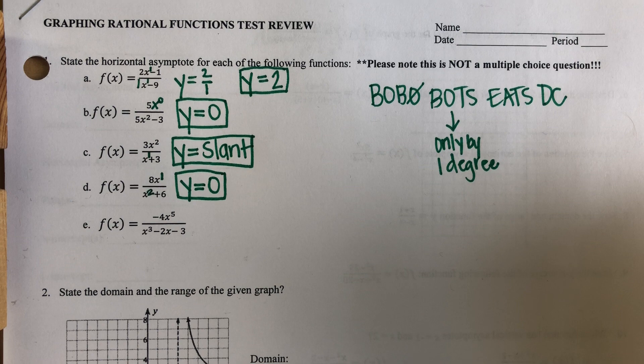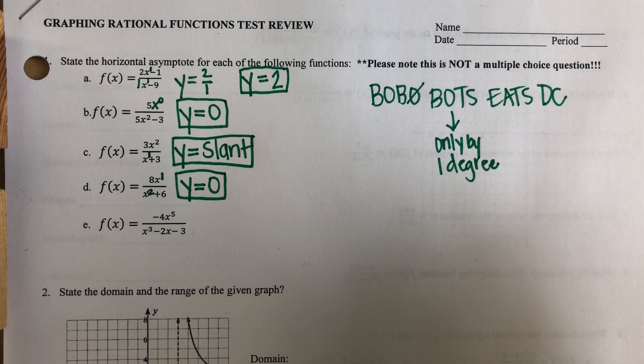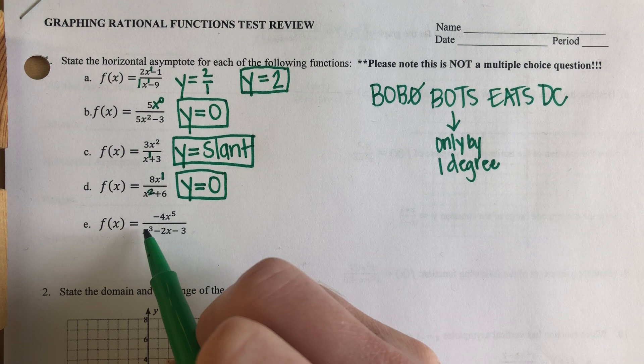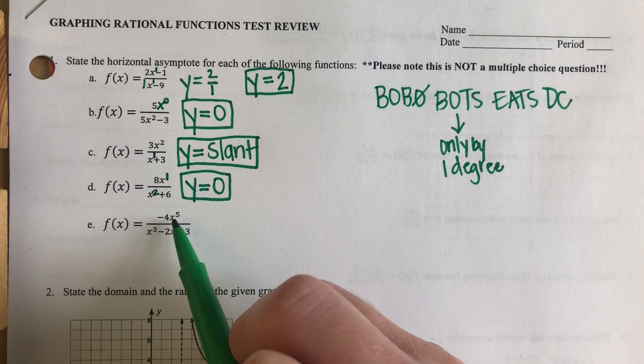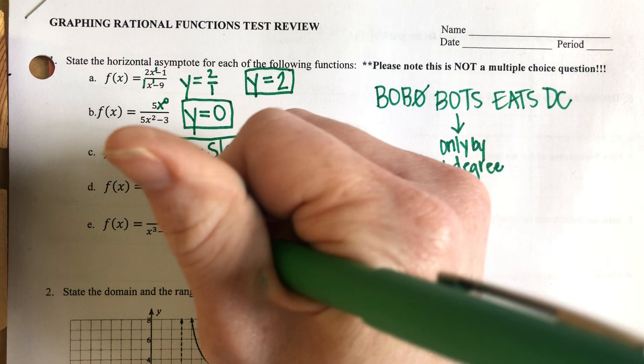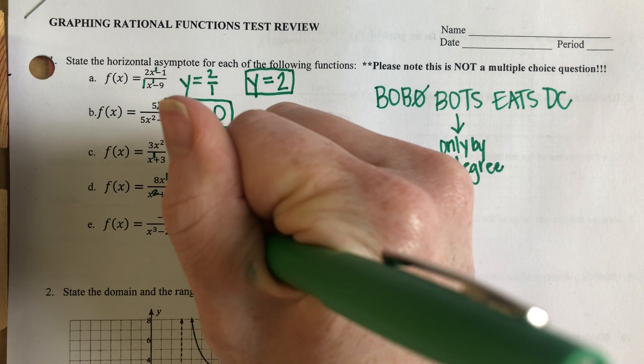And then part E, the last one for question number one. I have negative four X to the fifth over X cubed. Now it's bigger on the top, but it's by more than one degree — it's actually two degrees higher in the numerator than the denominator. So what I'm going to say here is that there is no horizontal asymptote. You can just simply state none.